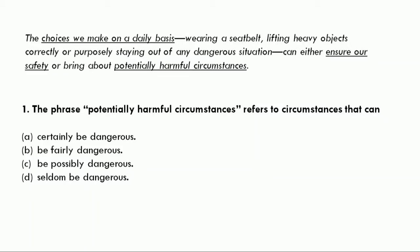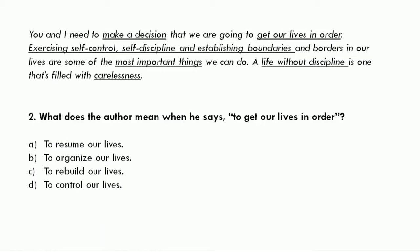If you read the text again, you will understand that 'potentially' here means 'possibly,' so the correct answer is 'be possibly dangerous.' Question 2: What does the author mean when he says 'to get our lives in order'? A. To resume our lives. B. To organize our lives. C. To rebuild our lives. Or D. To control our lives. If you read the text again, you will understand that the author wants us to follow discipline, so the correct answer is B: to organize our lives.